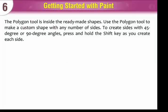Use the polygon tool to make a custom shape with any number of sides. To create sides with 45 degree or 90 degree angles, press and hold the shift key as you create each side.